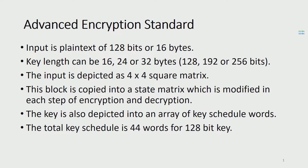Basically, AES consists of a message that is 128 bits long and a key that encrypts the message. The key can be 128, 192, or 256 bits long. The message is copied into a 4x4 square matrix known as a state. The state matrix is then modified in each step of encryption and decryption. The key, similar to the message, is copied into a separate 4x4 matrix and that key is expanded into words. The expanded keys are then used while encrypting and decrypting the message.